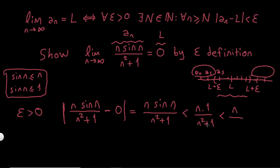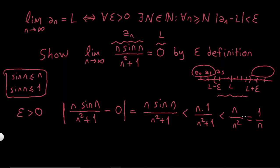I know that n² + 1 is greater than n², so taking the reciprocal, 1/(n² + 1) is less than 1/n². This gives n · (1/n²) = 1/n. And since small n is greater or equal to capital N, I can say 1/n ≤ 1/N.